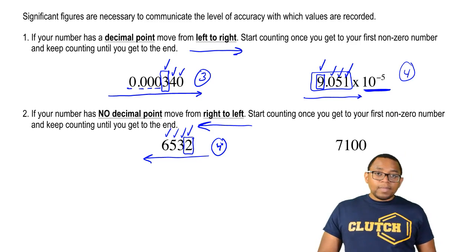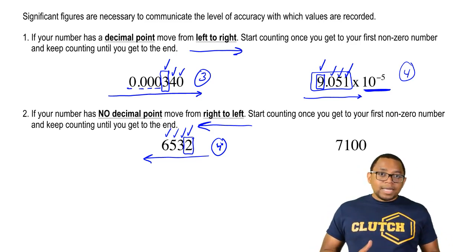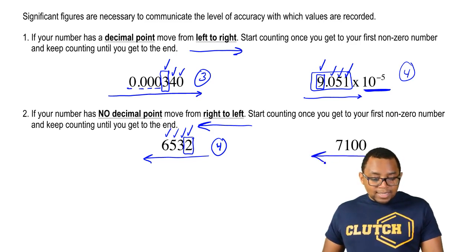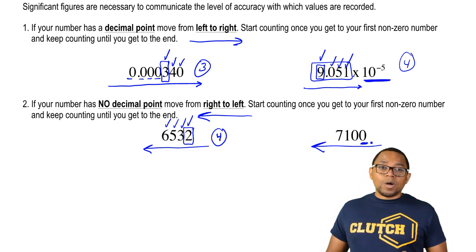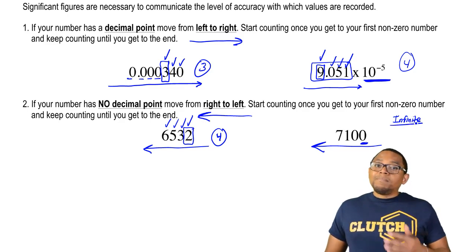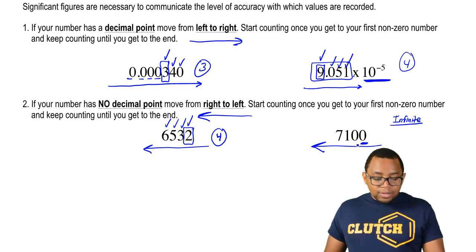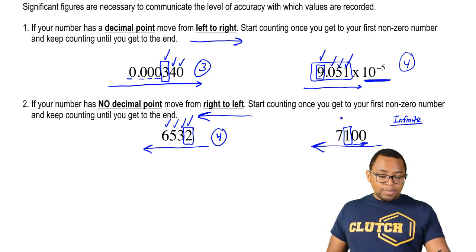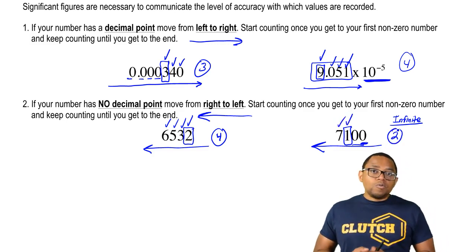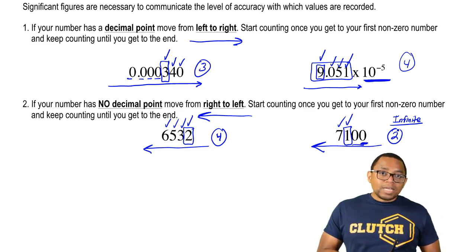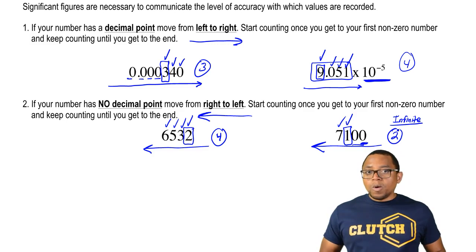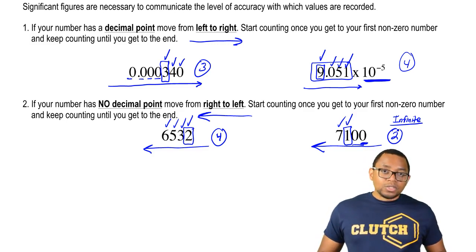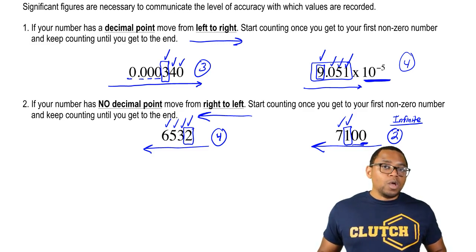The next number is tricky and depending on what your professor says, either one of these answers could be true. We're going to move from right to left. Most textbooks say that when going right to left, if the first number you pass is a zero, that would mean you have an infinite number of significant figures. But to simplify things, sometimes professors will say to skip those zeros and start counting at the first non-zero number, so this would be one, two sig figs. Make sure you ask your professor about this situation — if the first number passing is a zero, you could say it's infinite, or continue onward to your first non-zero number and start counting.